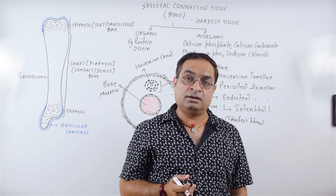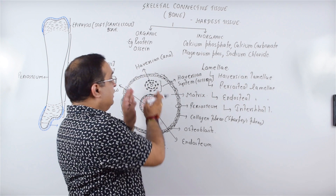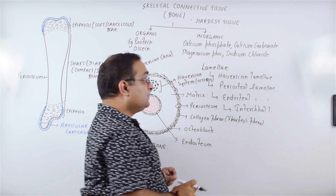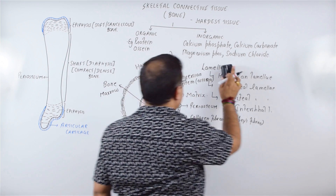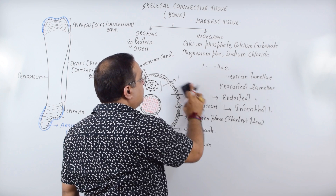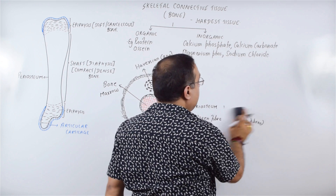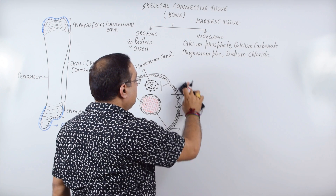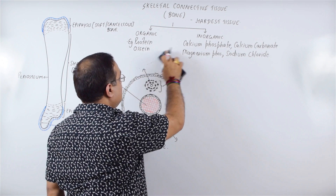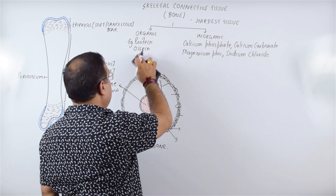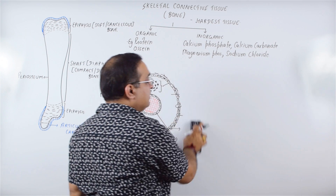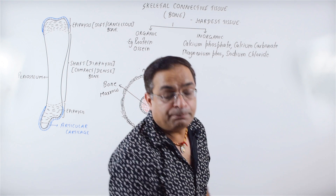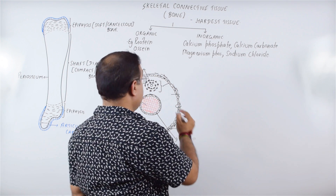The Haversian canal contains blood vessels, lymph vessels, and nerves. Osteocytes are the bone-maintaining cells. Osteoblasts are the bone-forming cells. In addition to osteoblasts and osteocytes, there are also osteoclasts, which are the bone-destroying cells.